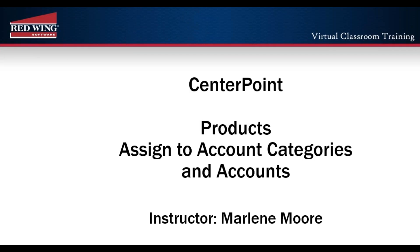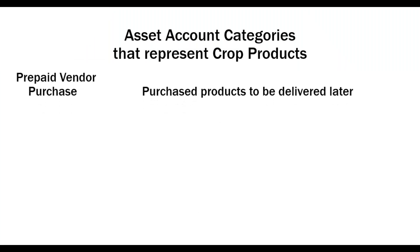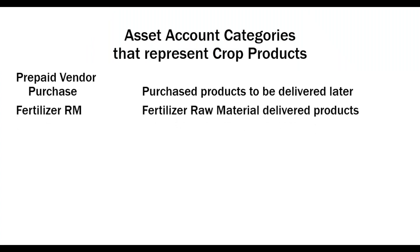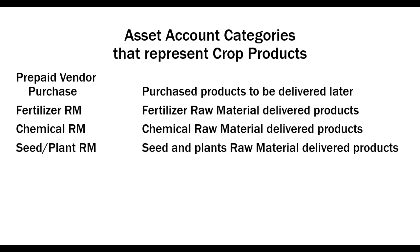Products will describe your asset inventory accounts. To accomplish that, an account balance detail needs to be assigned to the account categories used to purchase your products. The typical account categories that represent crop products are: prepaid vendor purchase, which represents products you purchase but haven't been delivered yet; once delivered, they'll be transferred to a raw material account — fertilizer raw material, chemical raw material, and seed and plant delivered products.